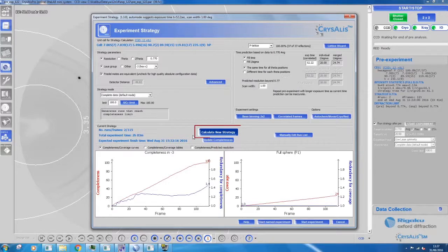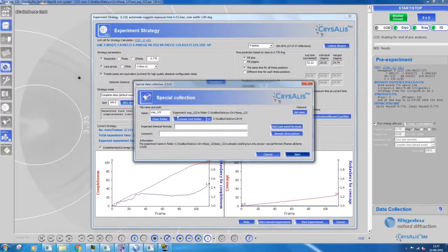Press calculate new strategy if you have changed anything on the right-hand side of the screen. The total time will change automatically if you change the exposure times. If you are happy with the strategy, start by pressing start named experiment.